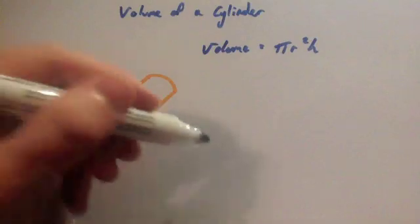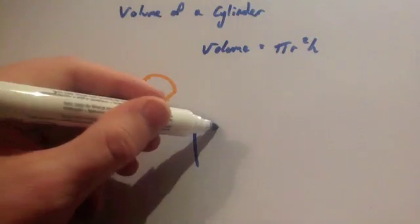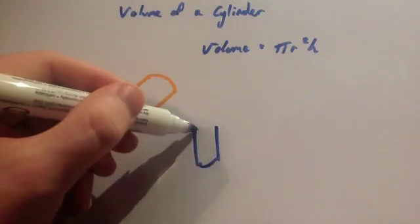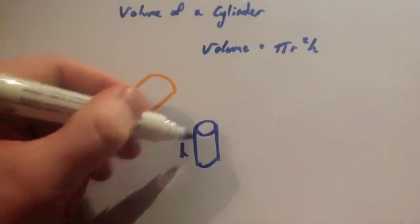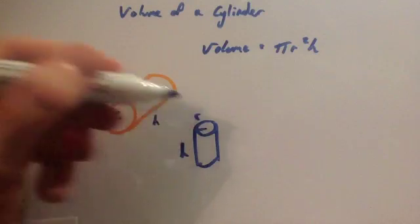This could be a cylinder laying down like this, or even it could be a cylinder which is standing up. Please excuse my terrible drawing. That's not too bad actually. Where h would be the height and r would be the radius.